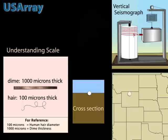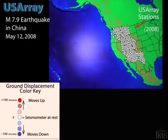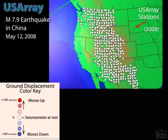We'll use the magnitude 7.9 earthquake in China to watch seismic waves arrive at the 2008 array of seismographs 11,000 km away.